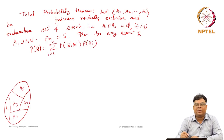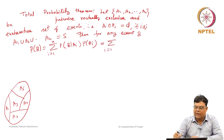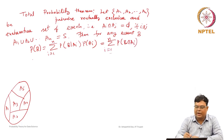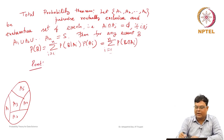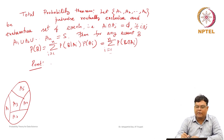This is the same as summing P(B ∩ A_i) from i=1 to n, which we have already proved. Now, since A1, A2, ..., AN are pairwise disjoint and exhaustive, and B is an event — a subset of S — we proceed with the derivation.